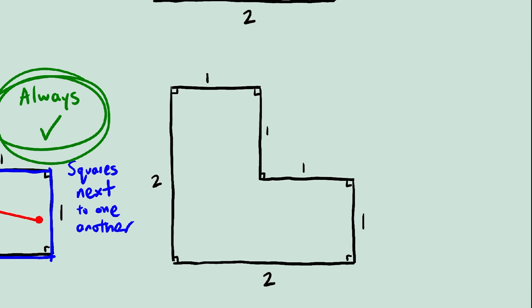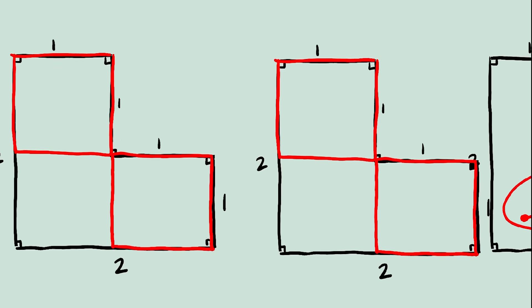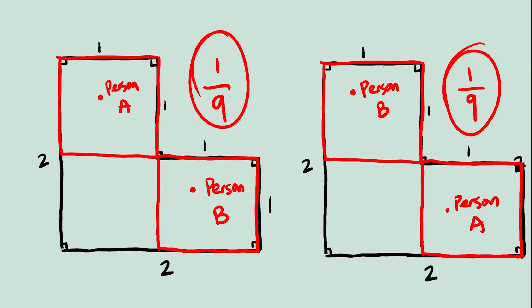So, the only scenario where the two people can't see each other is when one person's in this square and the other person's in this square. If you do the math, you'll find that this has a 2 over 9 chance of happening.